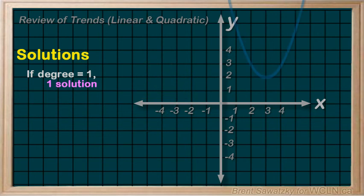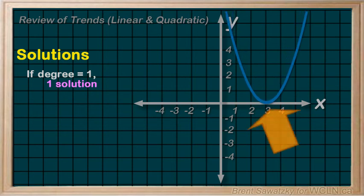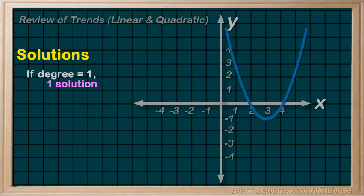For quadratic relationships, that is degree equals 2, we can see that we could have zero solutions, one solution, or two solutions.